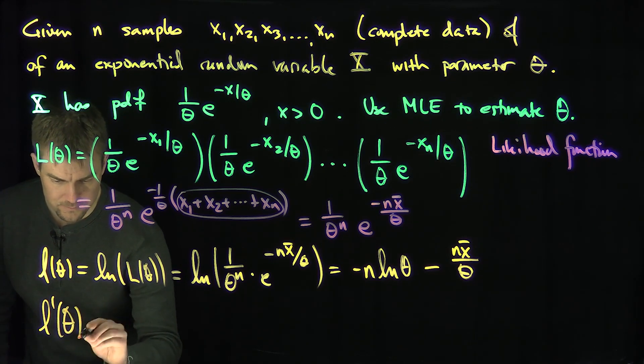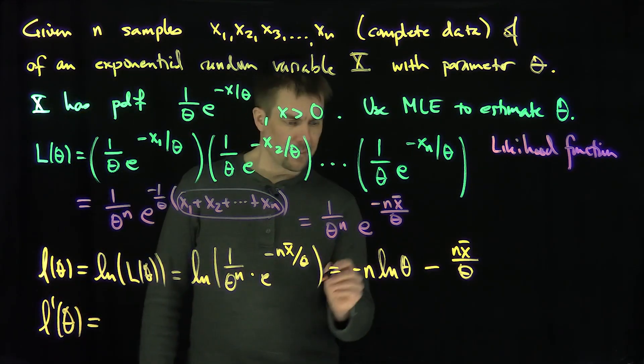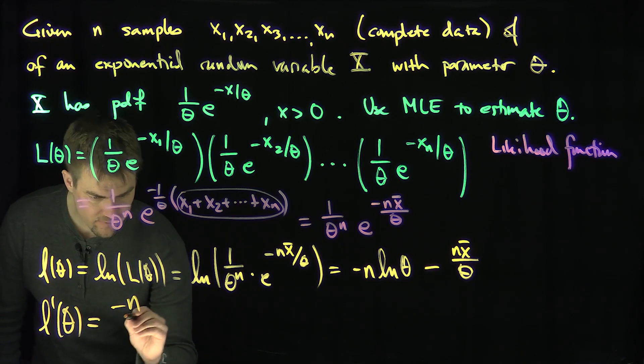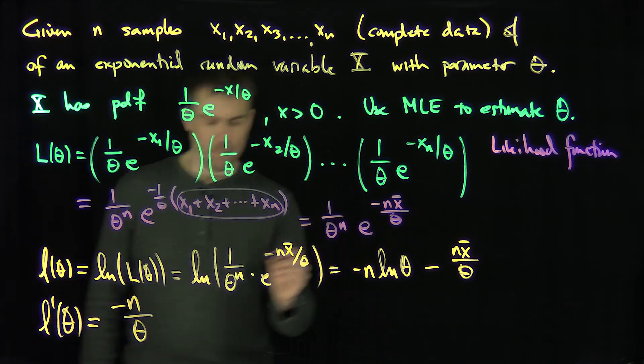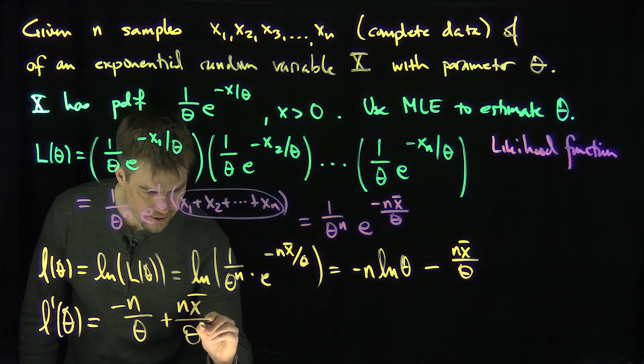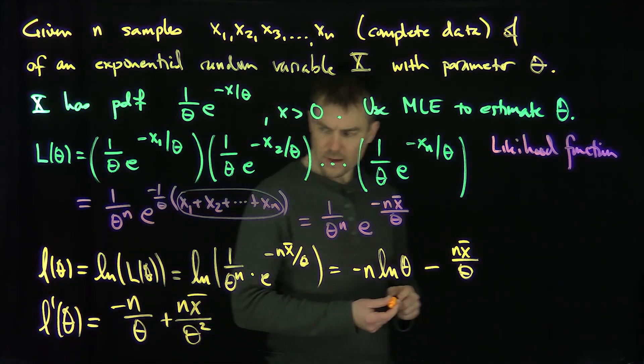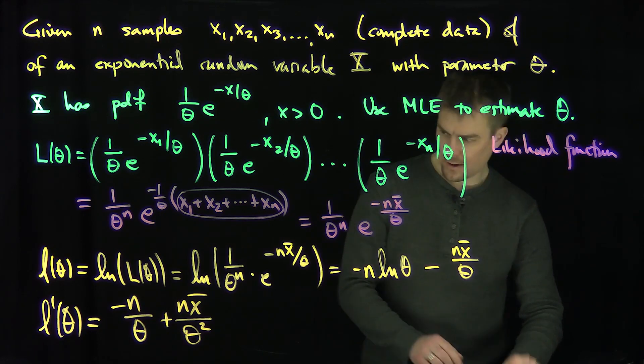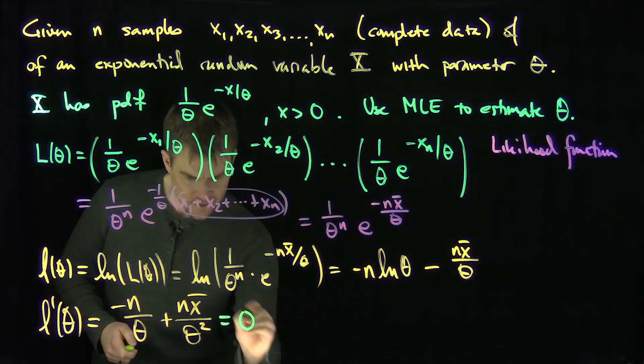So what's l prime of theta going to be? Well, I'm going to have a negative n over theta. That's the derivative of natural log. And I'm going to have a positive n x bar over theta squared. And we set this equal to zero to find the maximum value of this thing, set that equal to zero.